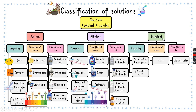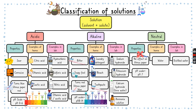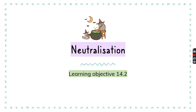Neutral solutions have the property that they don't have any effect on litmus paper, so the litmus paper will not change at all, whether it is red or blue. The pH is 7, and examples at home include water, and in the lab, distilled water.